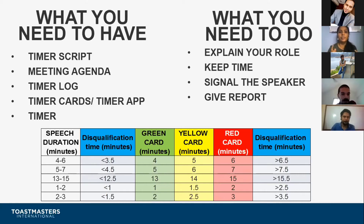For table topics, the allotted time is 1 to 2 minutes, so the green card is flashed at 1 minute, yellow at 1 and a half minutes, and red at 2 minutes. For evaluations, the allotted time is 2 to 3 minutes, so green is flashed at 2 minutes, yellow at 2 and a half minutes, and red at 3 minutes. Every speech gets a grace period of 30 seconds.